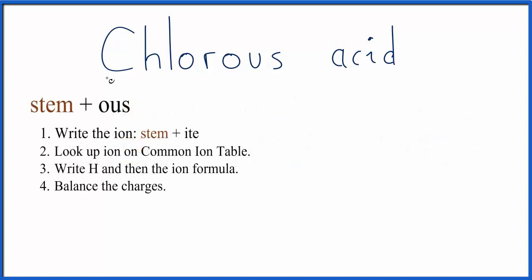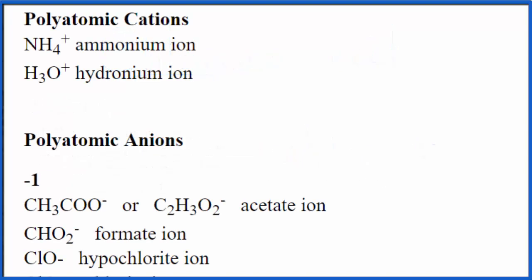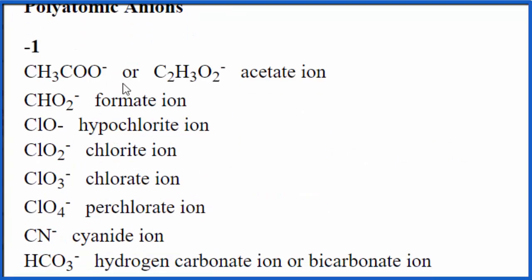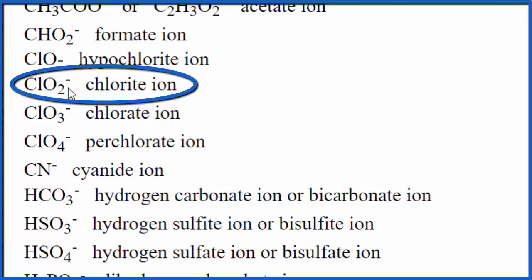We look at our stem — that's CHLOR. We write that, and then we replace the OUS with ITE. That means we have the chlorite ion, and we can look that up on a common ion table. Going down the list, there's hypochlorite, and there's chlorite: ClO2-.